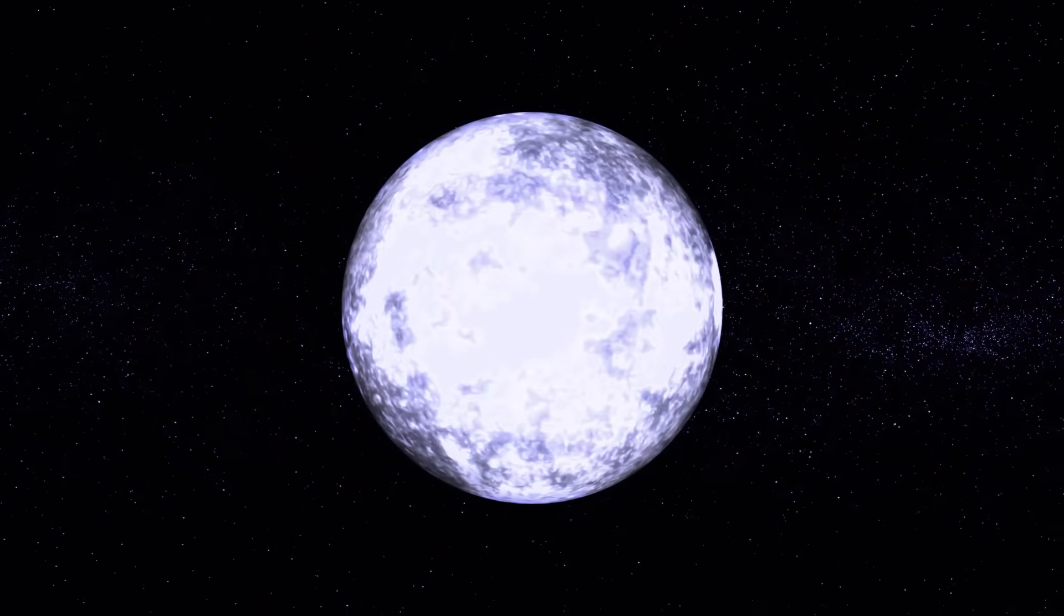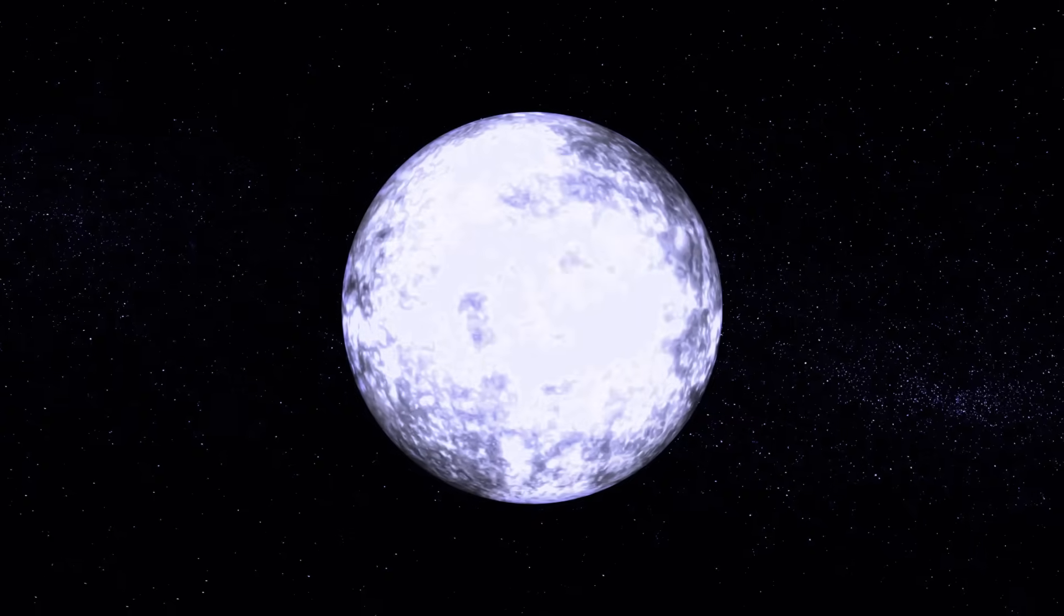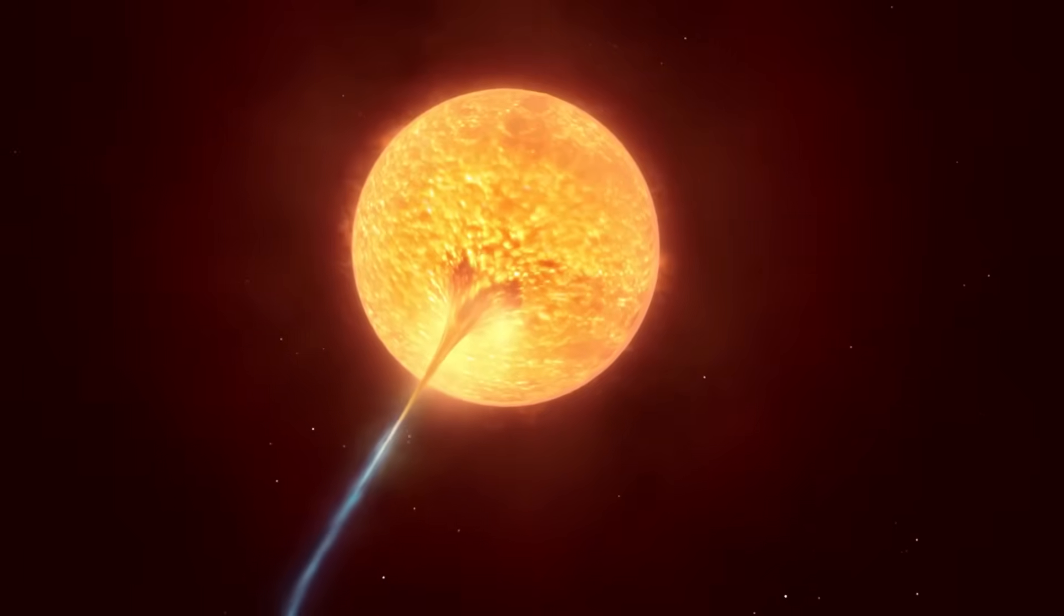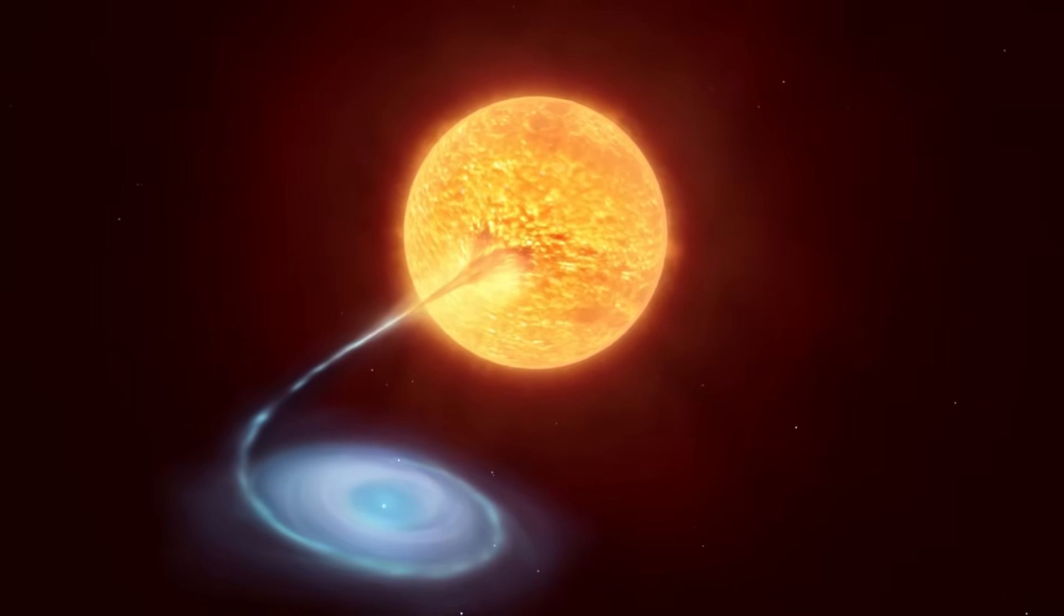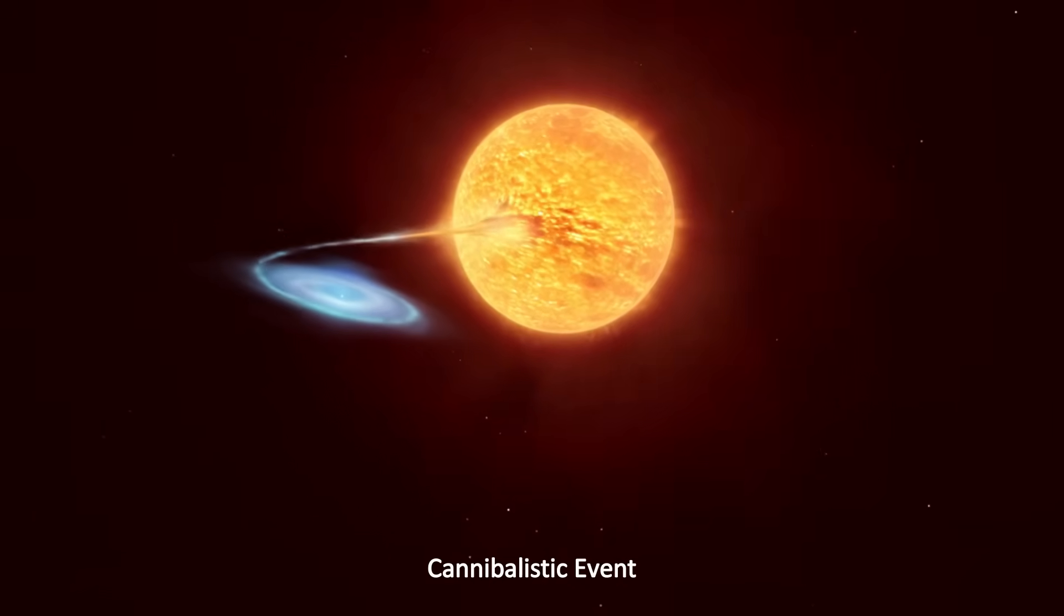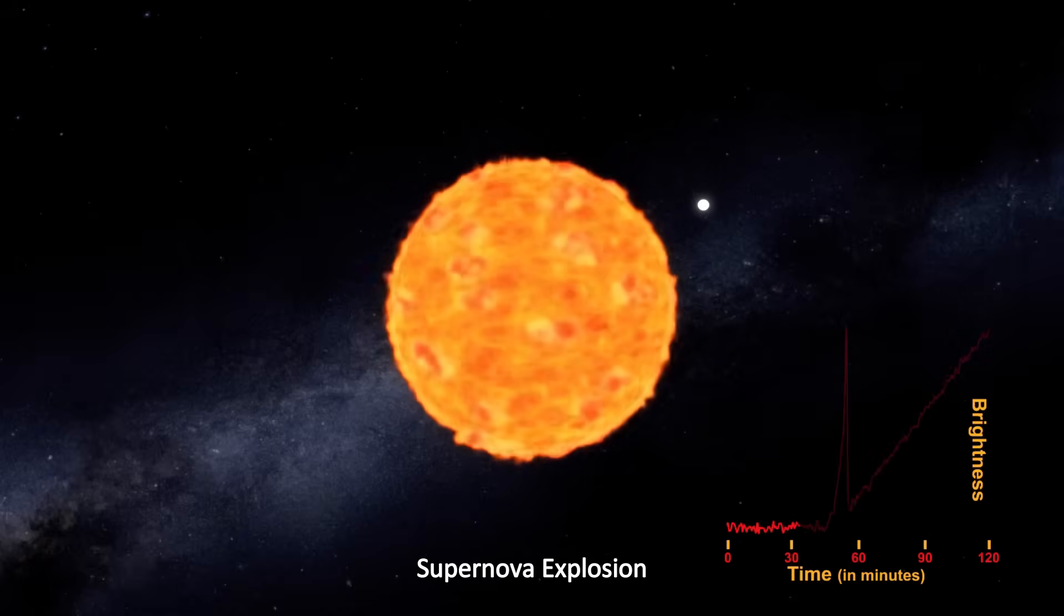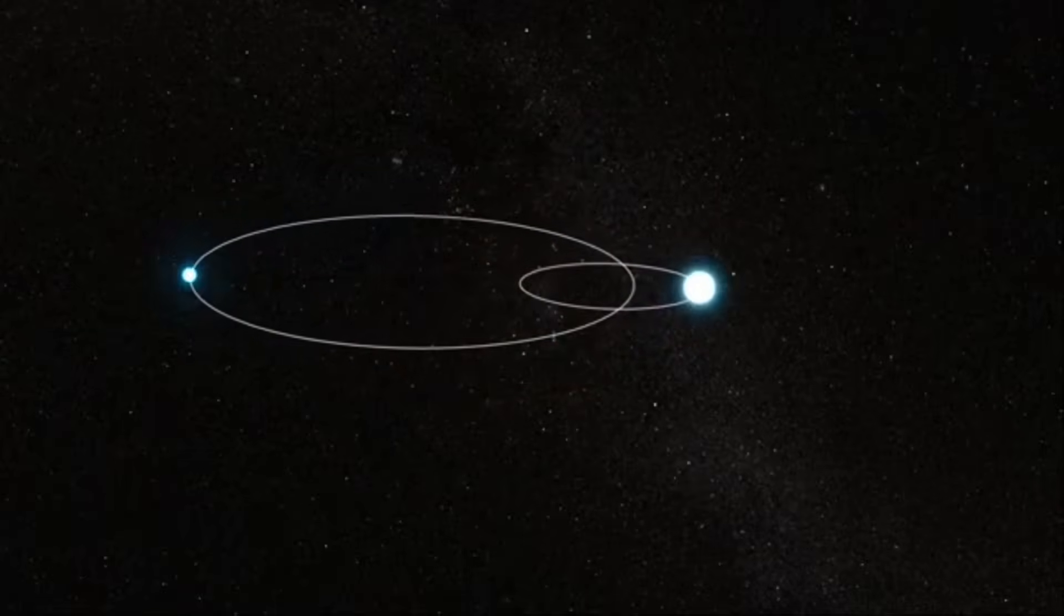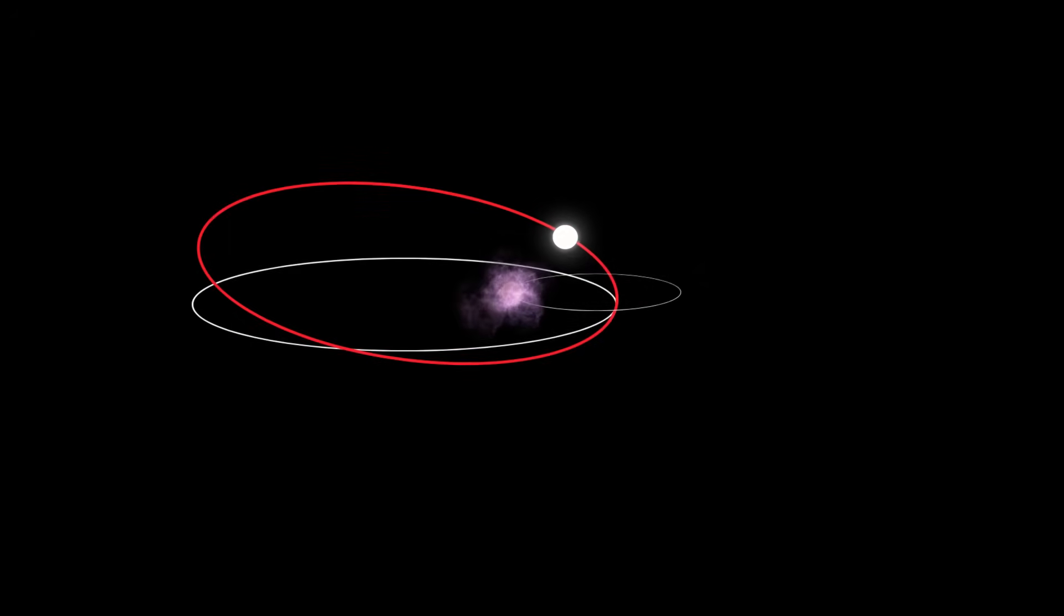In this scenario, the companion star faces two grim fates, neither of which looks promising. First, the immense gravity of Betelgeuse could pull the smaller star into it, consuming it in a cannibalistic event that might occur within the next 10,000 years. Alternatively, Betelgeuse could explode before the companion is fully consumed. This could disrupt the companion's orbit, potentially accelerating its demise or altering its path altogether. So yeah, neither outcome bodes well for the companion star.